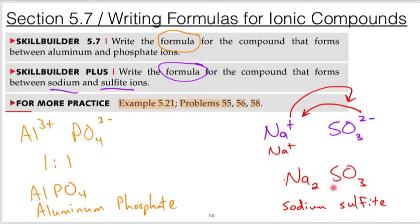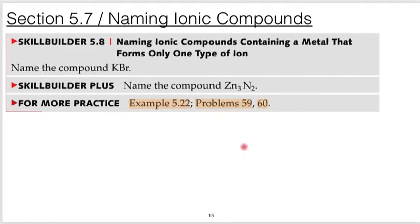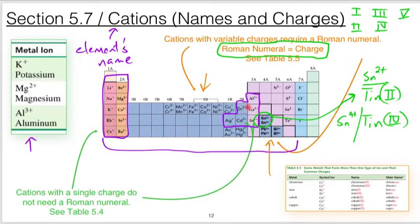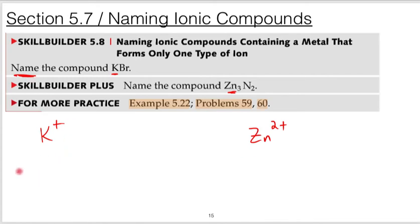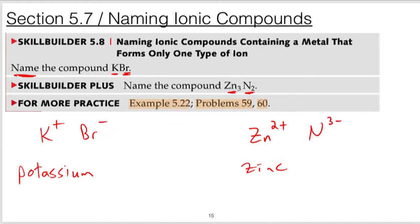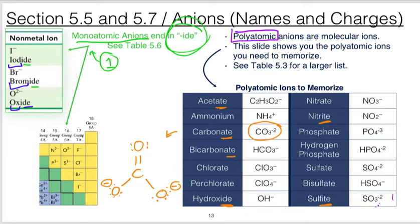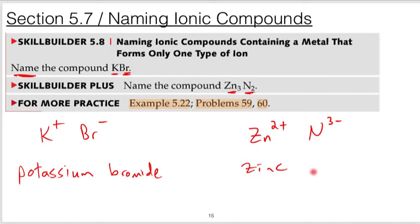We go back and forth: sometimes you're given the formula and determine the name, sometimes given the name and determine the formula. Looking at the next examples — potassium and zinc. Potassium always takes plus one and zinc always takes plus two, so I do not need a Roman numeral; I just use the element names. The anions are bromide and nitride — monoatomic anions use the -ide suffix. So the names are potassium bromide and zinc nitride.